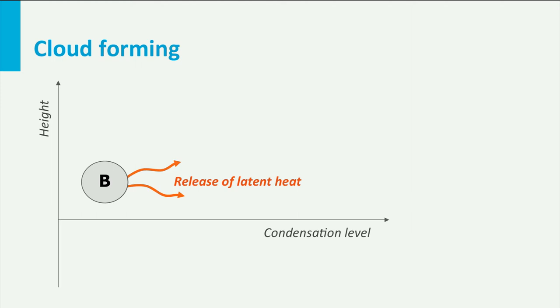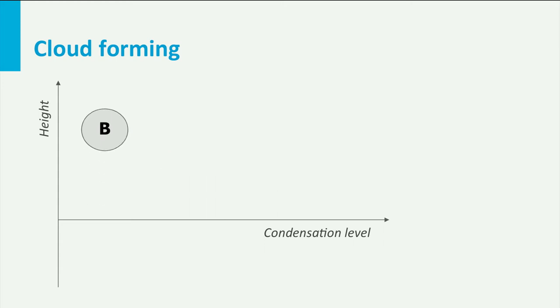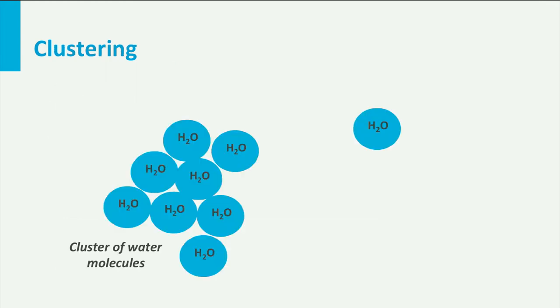During condensation, latent heat is released into the air, which gives additional energy to the parcel for more convection. On its way upwards, more condensation occurs and the cloud grows. While this is already a complex process, we have to add one more layer of complexity.